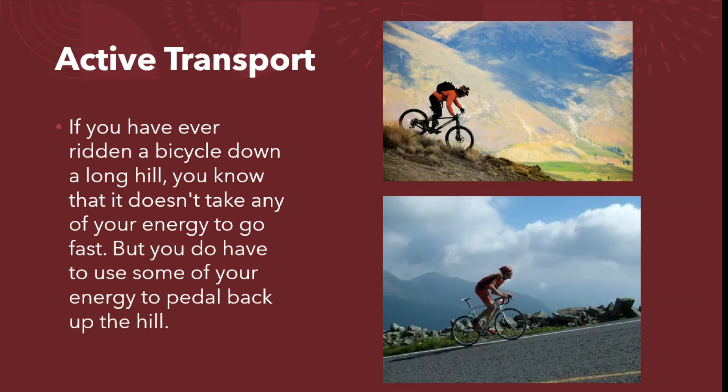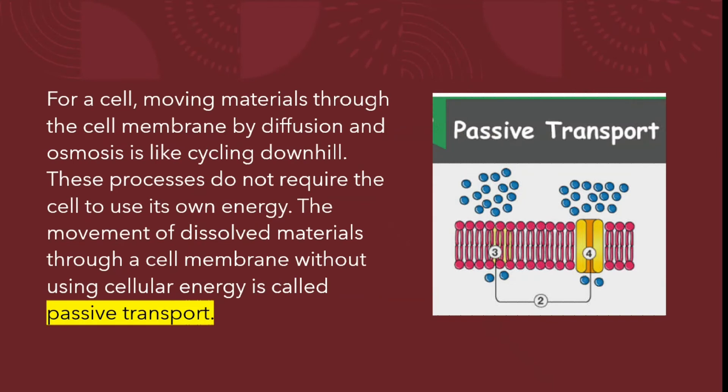If you have ever ridden a bicycle down a long hill, you know that it doesn't take any of your energy to go fast, but you do have to use some of your energy to paddle back up the hill. For a cell, moving materials through the cell membrane by diffusion and osmosis is like cycling downhill — these processes do not require the cell to use its own energy. The movement of dissolved materials through a cell membrane without using cellular energy is called passive transport.